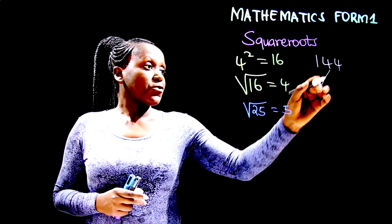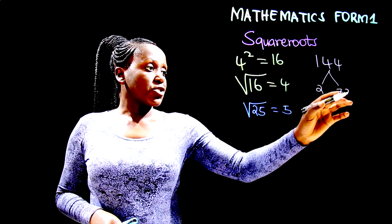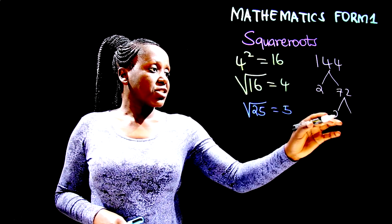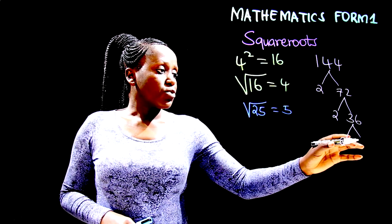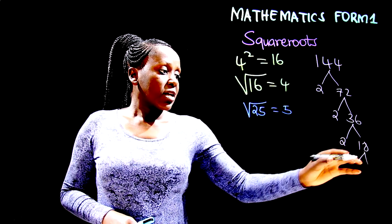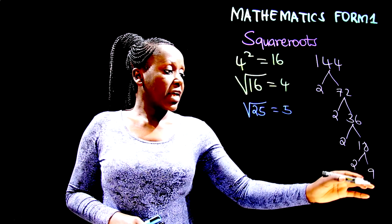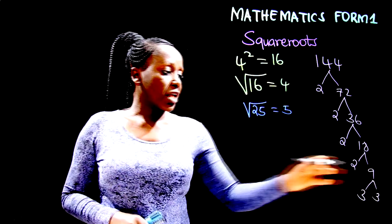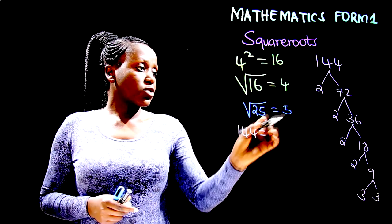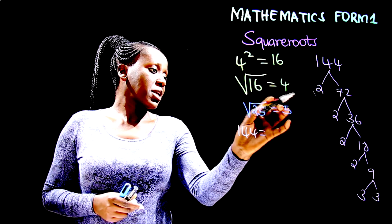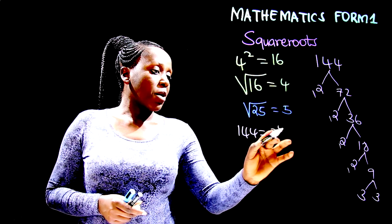We divide 144 by 2 to obtain 72, divide 72 by 2 to obtain 36, divide 36 by 2 to obtain 18, divide 18 by 2 to obtain 9, then divide 9 by 3 to obtain 3. So we can write that 144 is equal to 2 to the power 4 times 3 to the power 2.